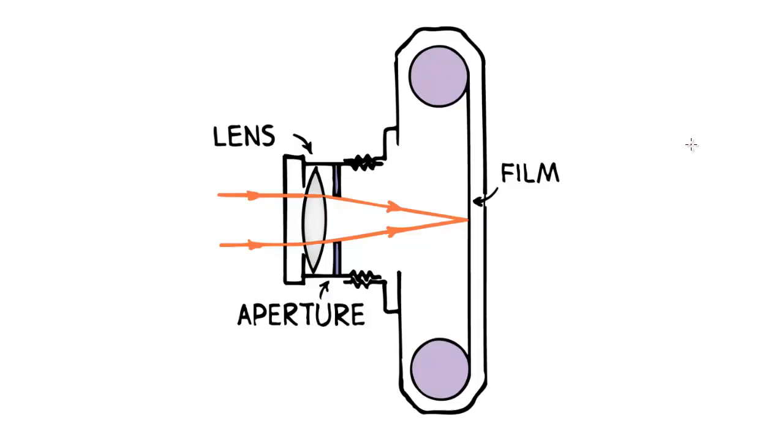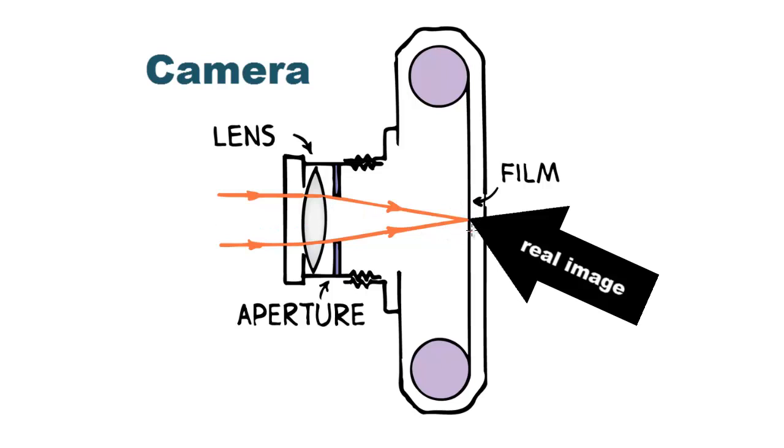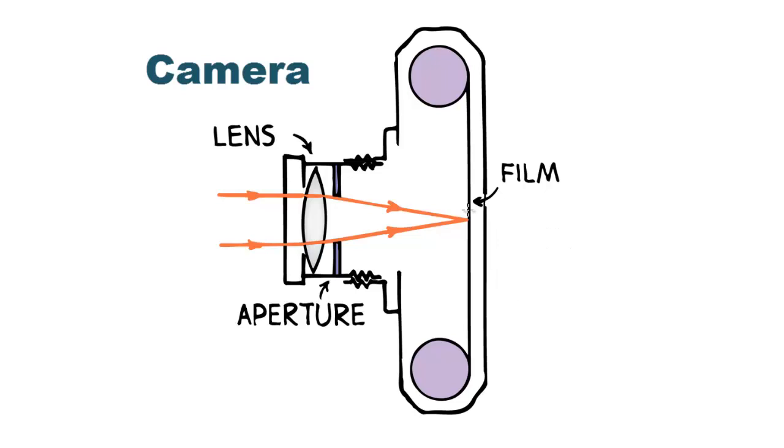The first optical device we're going to take a look at is the film camera. It's a very simple device. Light comes in the front and the lens forms a real image on the back here. In the old days this would be a film strip and nowadays it would be some kind of computer chip that would convert the light information into an image.